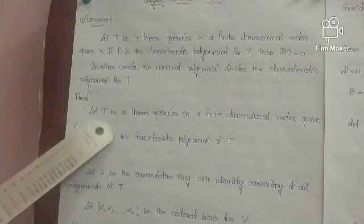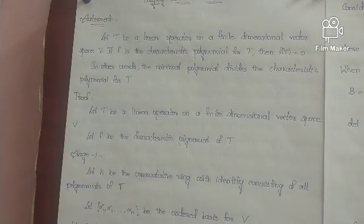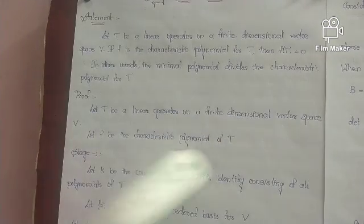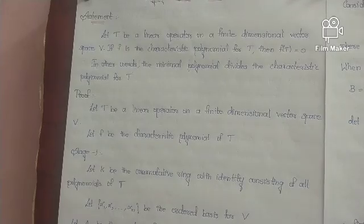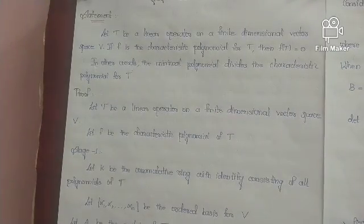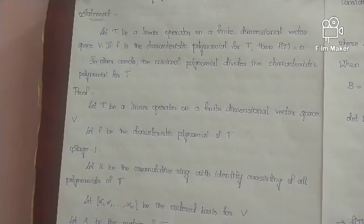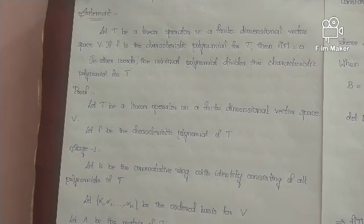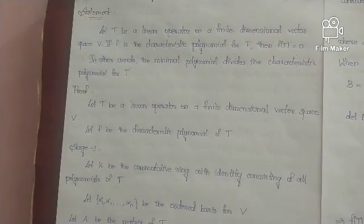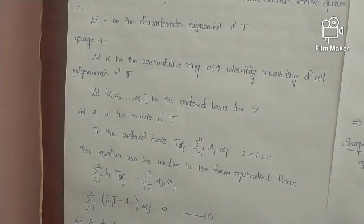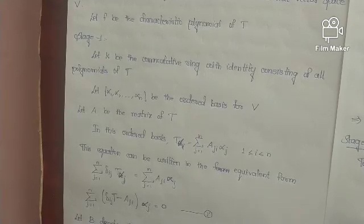T is the linear operator on a finite dimensional vector space. F of T is equal to 0. I am going to prove it. In the case of the Cayley-Hamilton theorem, the main concept is a commutative ring and square matrix. That is the characteristic equation — that is the case of the Cayley-Hamilton theorem in general.